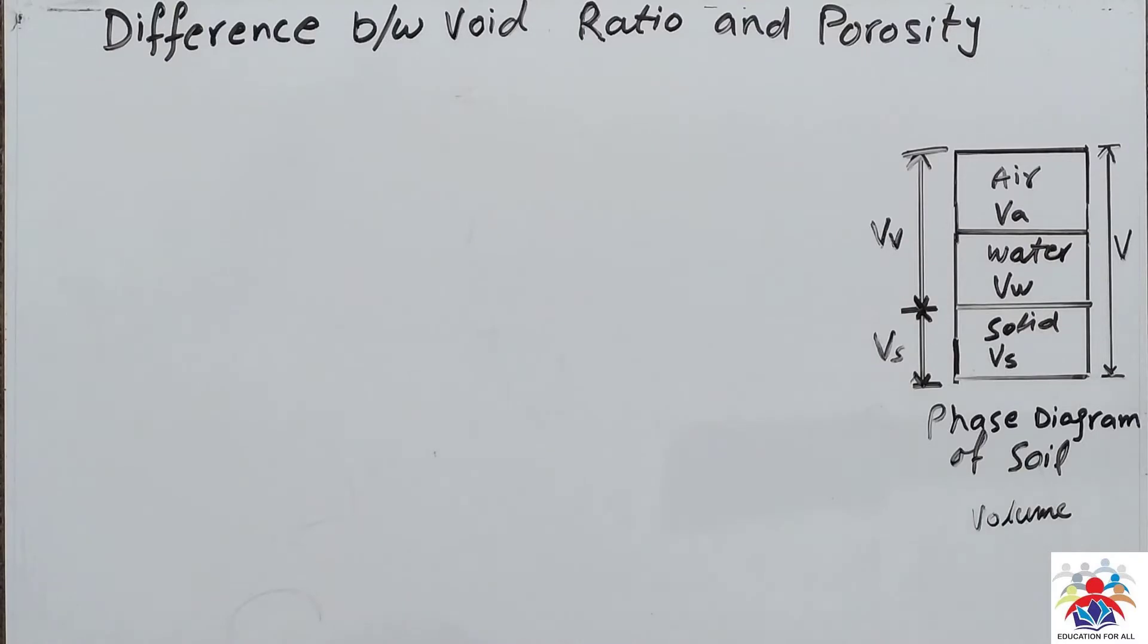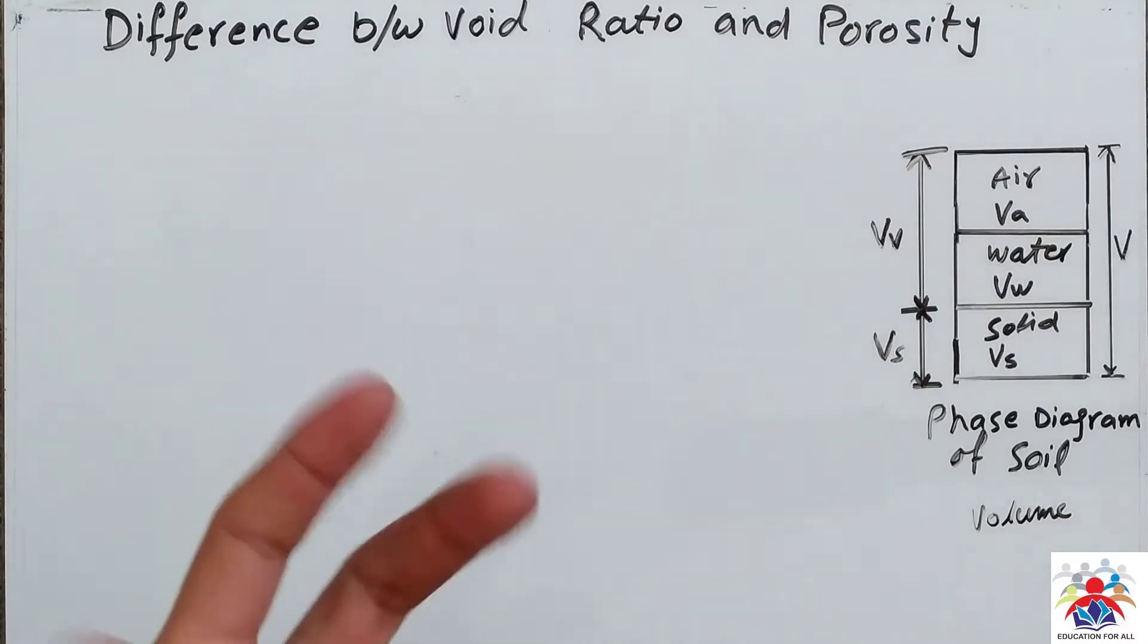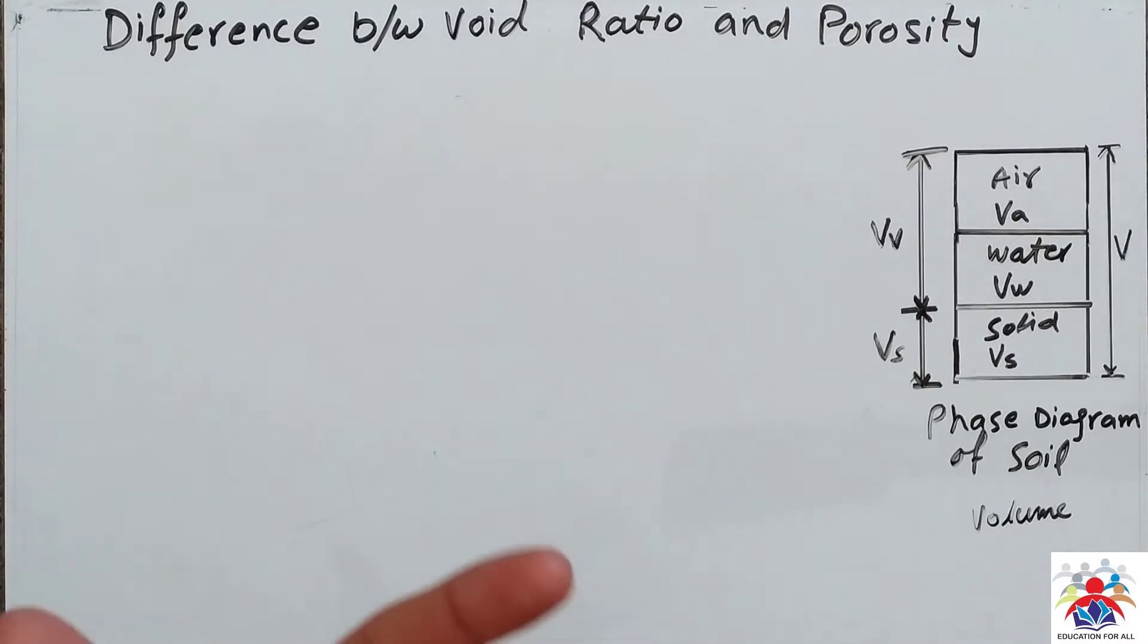Hello and welcome to my YouTube channel. In this video I am going to explain the difference between void ratio and porosity. In terms, basically both sound similar. Porosity means also some kind of voids in a diagram or in our soil, in anything. Void ratio is also like how much of the ratio of voids or empty places or porosity we have in a soil, but there's a little difference between them.